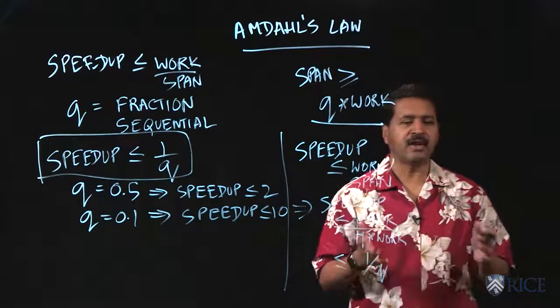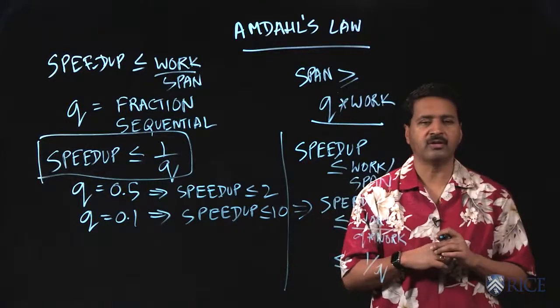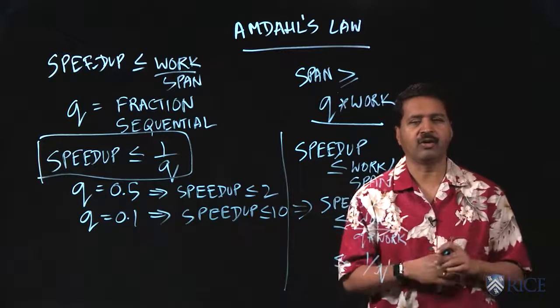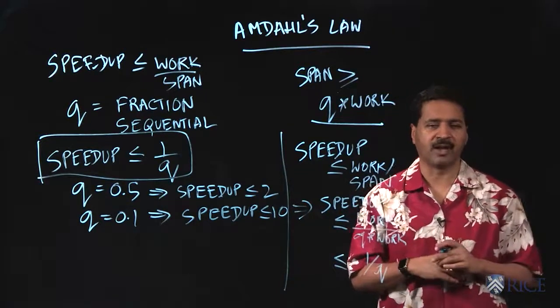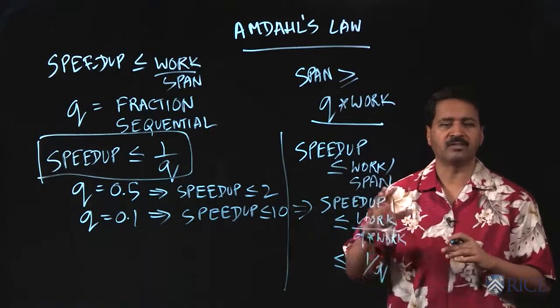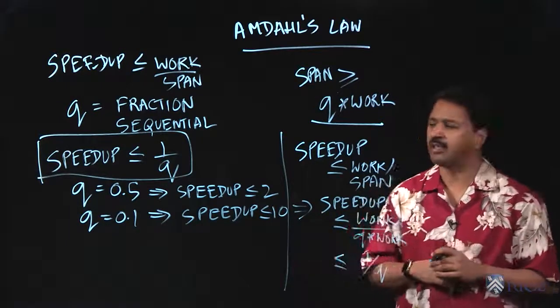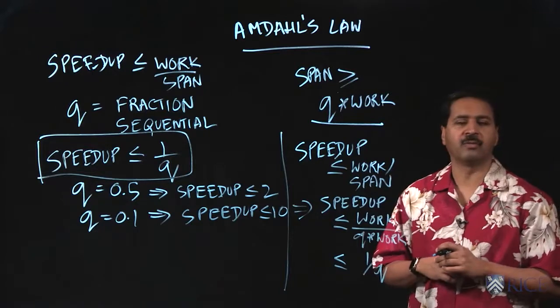And this idea is used very commonly. It's quite common in parallel computing for people designing hardware or software to talk about an Amdahl's law bottleneck. What they mean is that there's some part of the computation that's being done inherently sequentially, so that is going to limit the speedup.